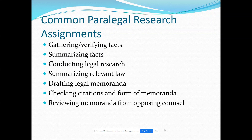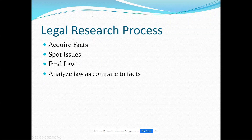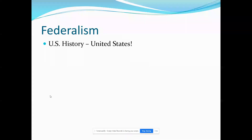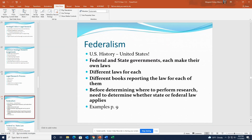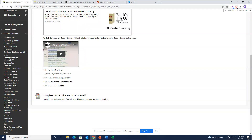As a paralegal in your future career, research work may include gathering and verifying facts, summarizing facts, conducting legal research, summarizing relevant law, drafting memos, checking citations, and reviewing memos from opposing counsel. Generally, our legal research process is: get your facts, come up with your issues, look for your law, compare the law you found to the facts of your case, and then communicate your findings in written, verbal, formal, or informal ways. I'm going to pause this so you can take a break and watch the second video for this class.